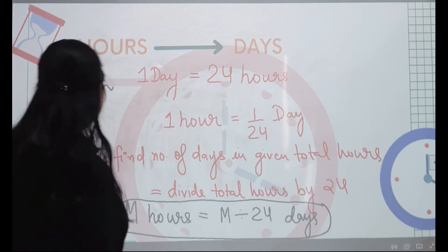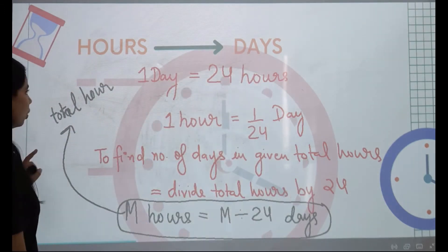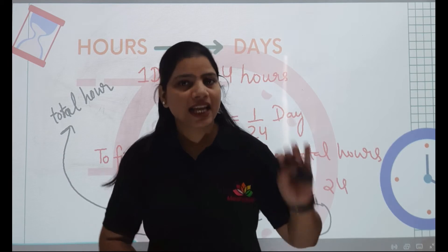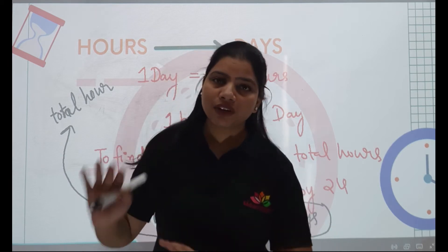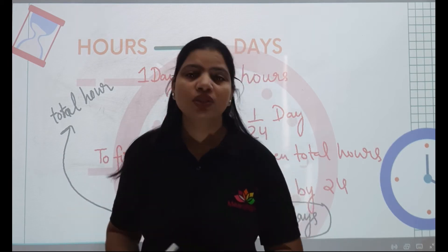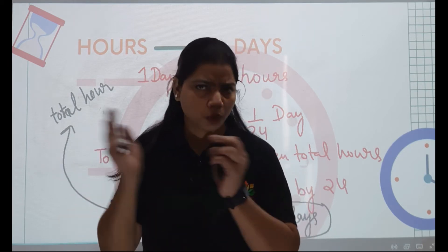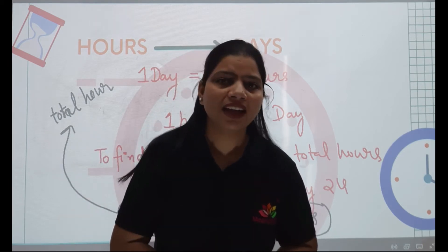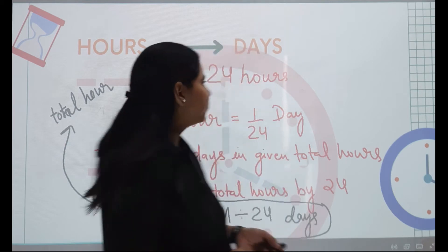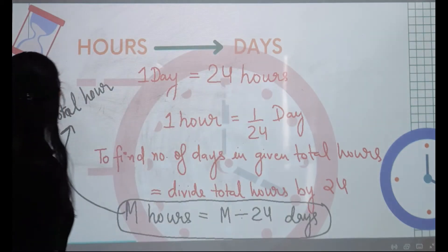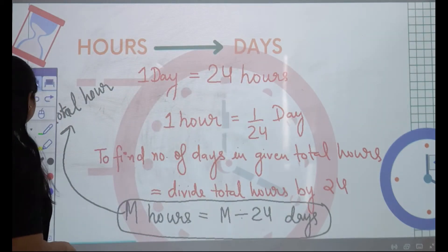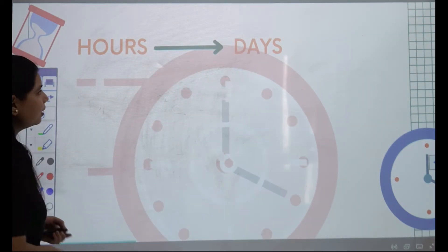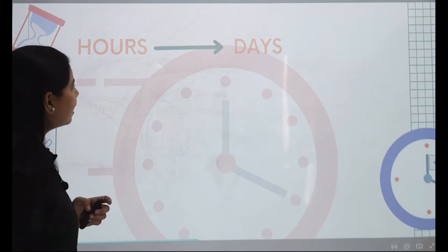Hope you've understood it. When we need to find days from a given total of hours, we just take the total hours and divide by 24. Now let's move on to the next slide.